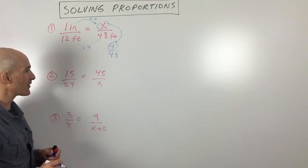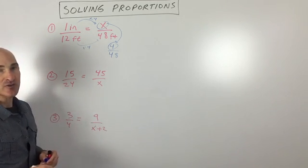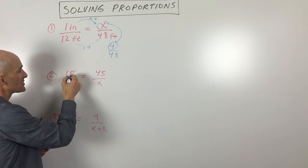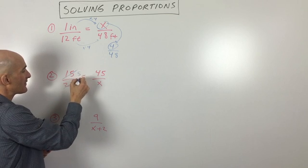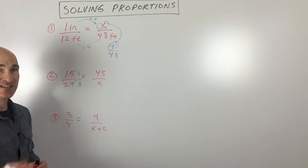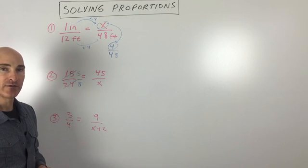So you're with me so far? These are kind of large numbers, though. So what you might want to do is reduce this fraction first. So 3 goes into 15 five times, 3 goes into 24 eight times. I divided the top and the bottom by the same number, so it's the same equivalent fraction.